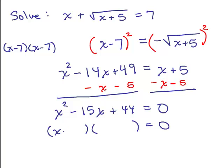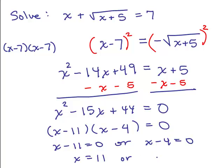So what we have is x squared minus 15x plus 44 equals 0 and now we want to factor the left-hand side. This factors to x minus 11 and x minus 4, so we have to set each of those equal to 0, x minus 11 equals 0 or x minus 4 equals 0, so x is 11 or x is 4 but one of the most important things about solving square root problems is you must check your answer in the original equation.